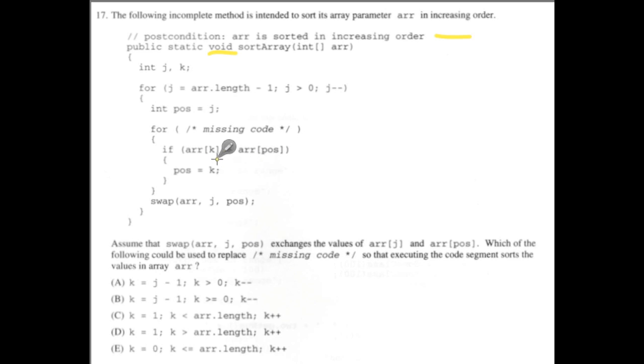So what we do here is we say if what's at array sub K, and K is going to come from this missing code, is greater than what's at array sub pos, right? Then we realize that the next largest element isn't at position pos. It's at position K. So we say pos is now equal to K.